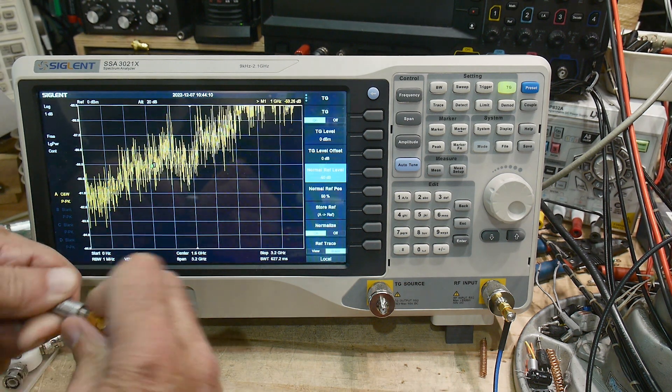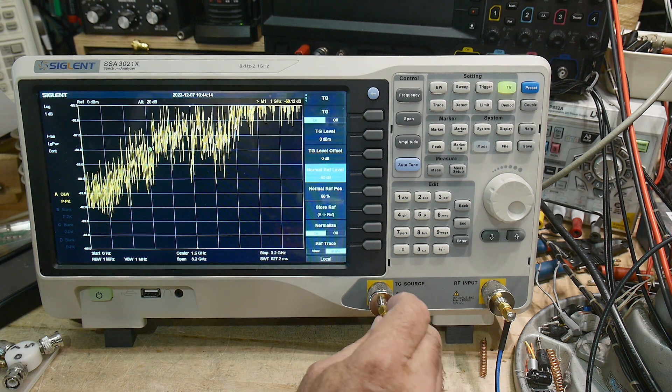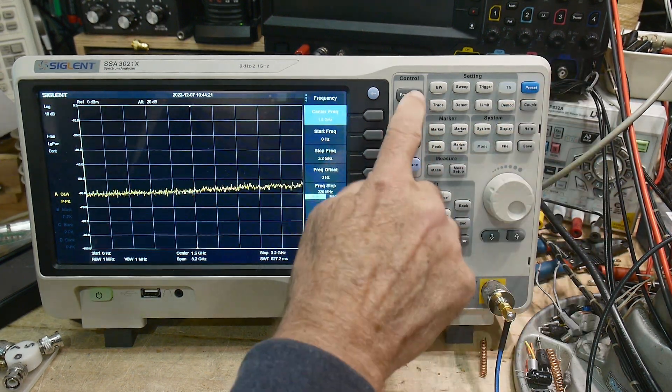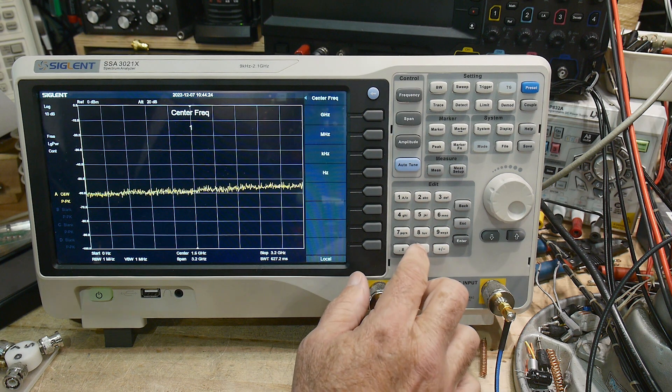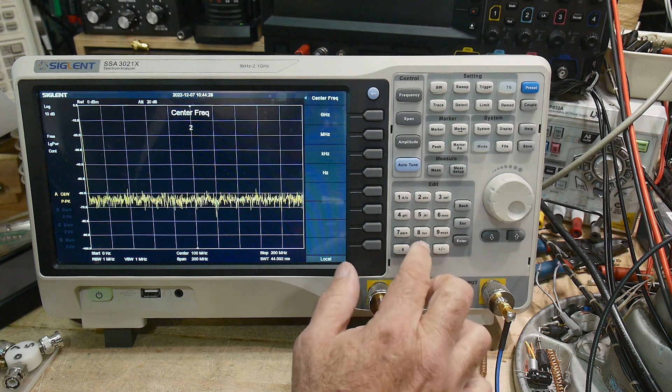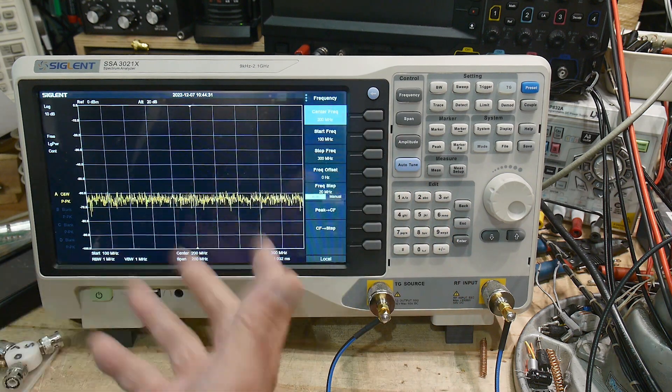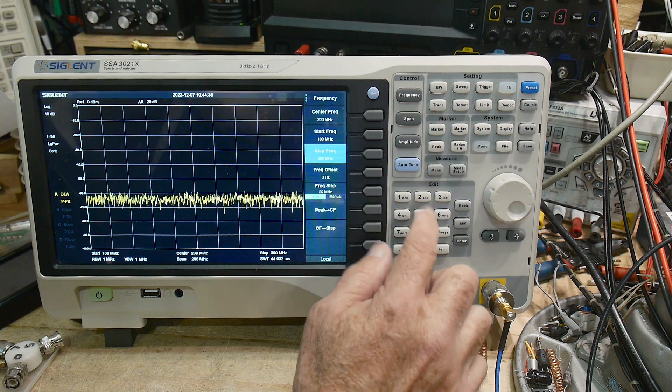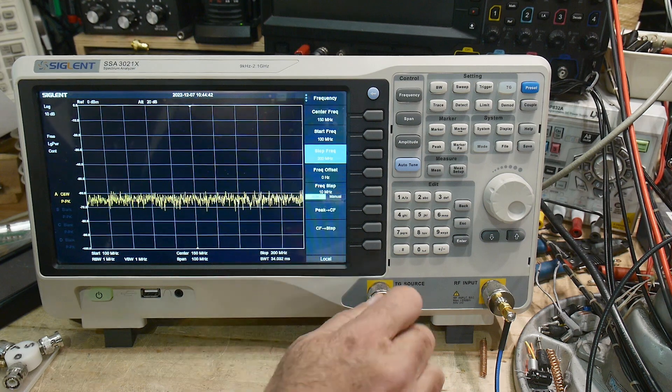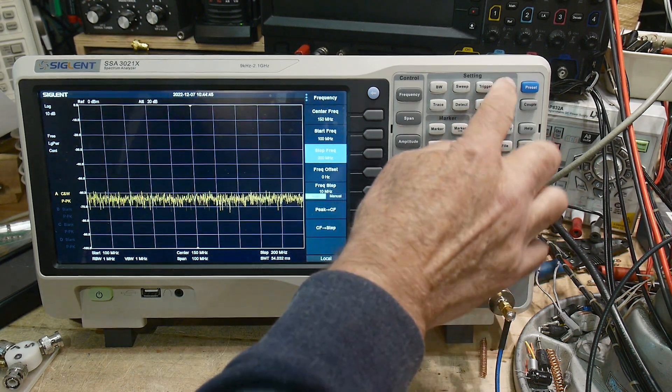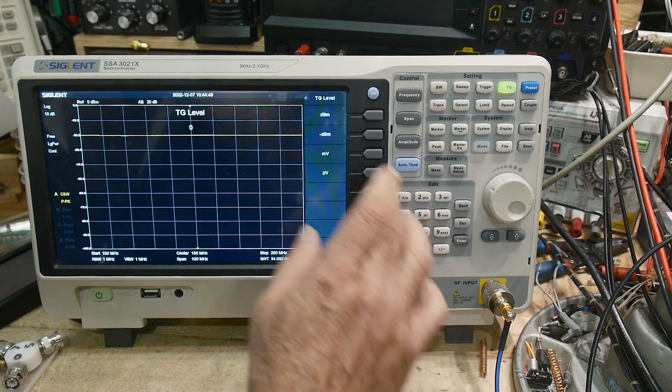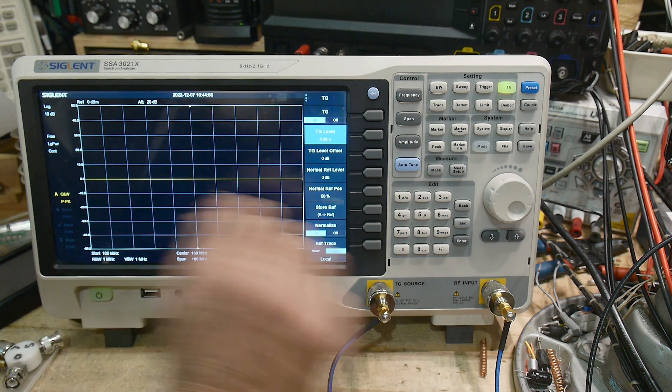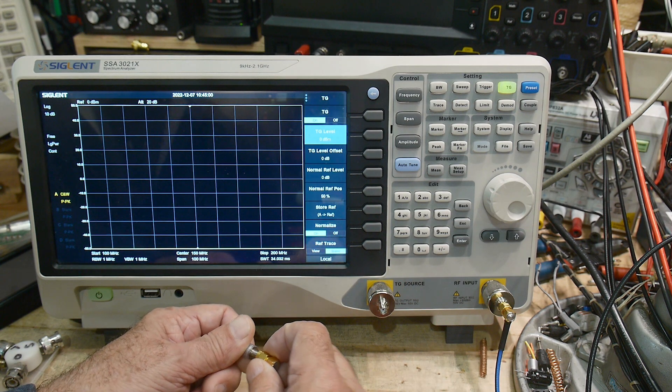This attenuator is good to 12.4 gigahertz, but I think we can do a little bit better here. Let me do a preset. I'm going to set our frequency from 100 megahertz to 200 megahertz. Let's say I'm going to be measuring something around 144 megahertz, so I'm going to go between zero and 200, stop frequency 200 megahertz. Zero to 200. I'm going to turn on the tracking generator, set my output level to zero, store it and normalize it, so now they're at zero.